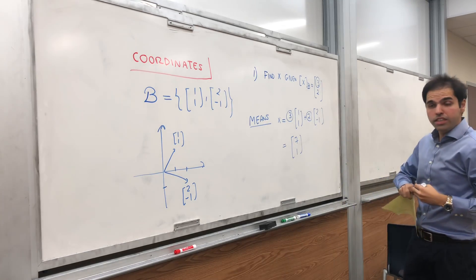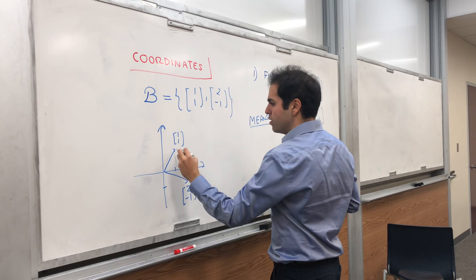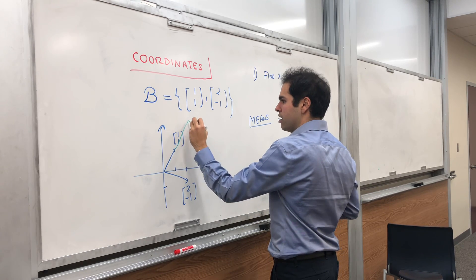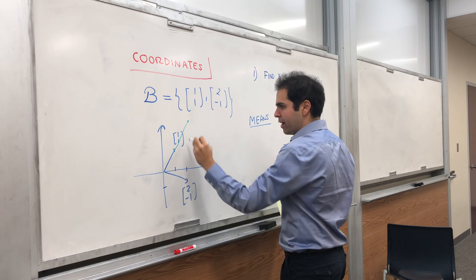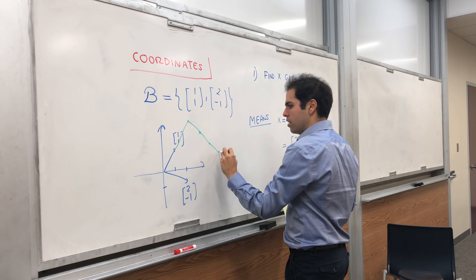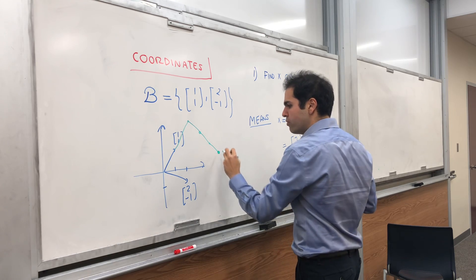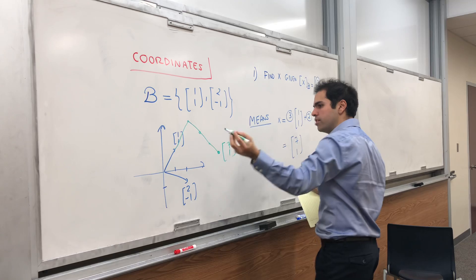And indeed, let's check that in our graph. So suppose you go two steps this way, you get this point, and three steps this way, so one, two, three, you should get roughly, and you see it's roughly true, that you get the point (7,1).